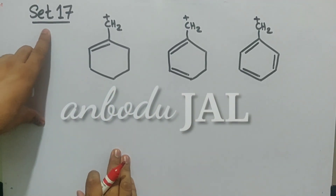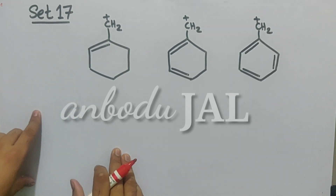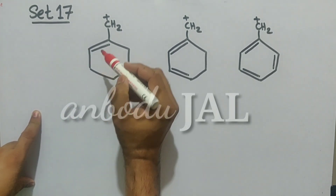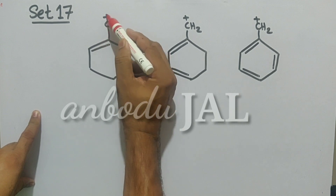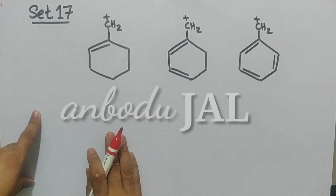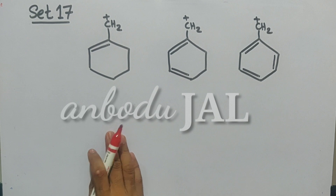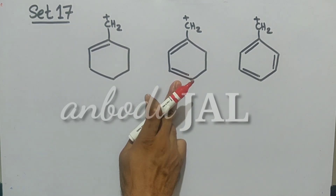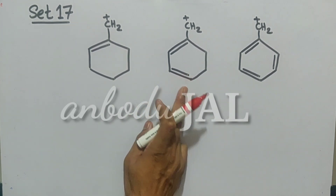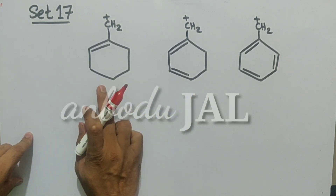In this set, the first compound is a conjugated system — double bond and positive charge are in conjugation. This is also a conjugated system, but here conjugation is more than in the first structure.